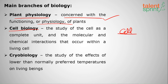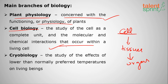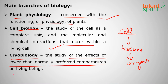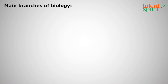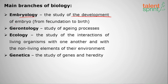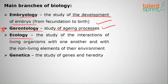Cell biology is the study of cells — cells form tissues and tissues form organs — covering how cells perform their functions. Next is cryobiology: 'cryo' means lower temperatures, so it is the study of the effects of lower than normally preferred temperatures on living beings. Next is embryology: the study of the development of embryos, how male and female gametes fuse. Next is gerontology: a very repeated question — the study of aging processes in living organisms.